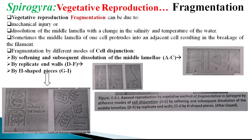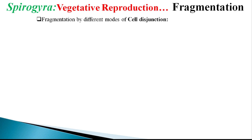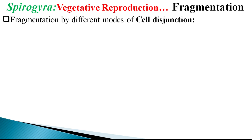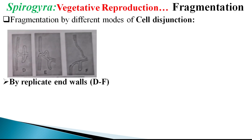There are various species and different examples, but as part of basic understanding, focus on this particular aspect of fragmentation. Mechanical injury or the softening and dissolution of the middle lamella causes fragmentation, followed by cell division and re-division to make a new filament. The replicate septa cause fragmentation through cell disjunction.